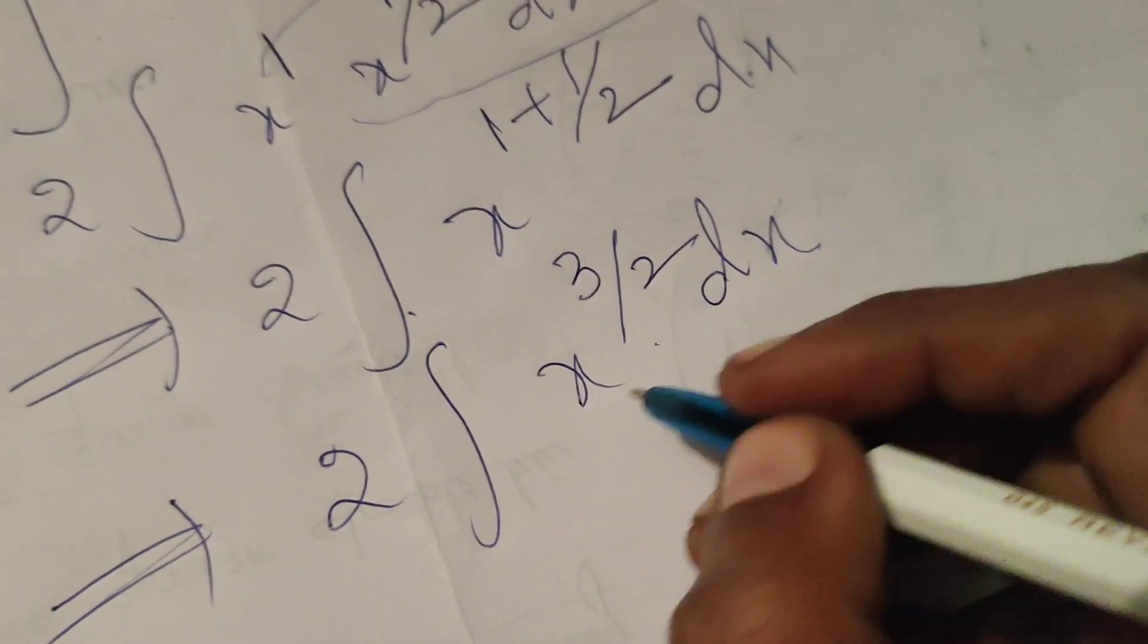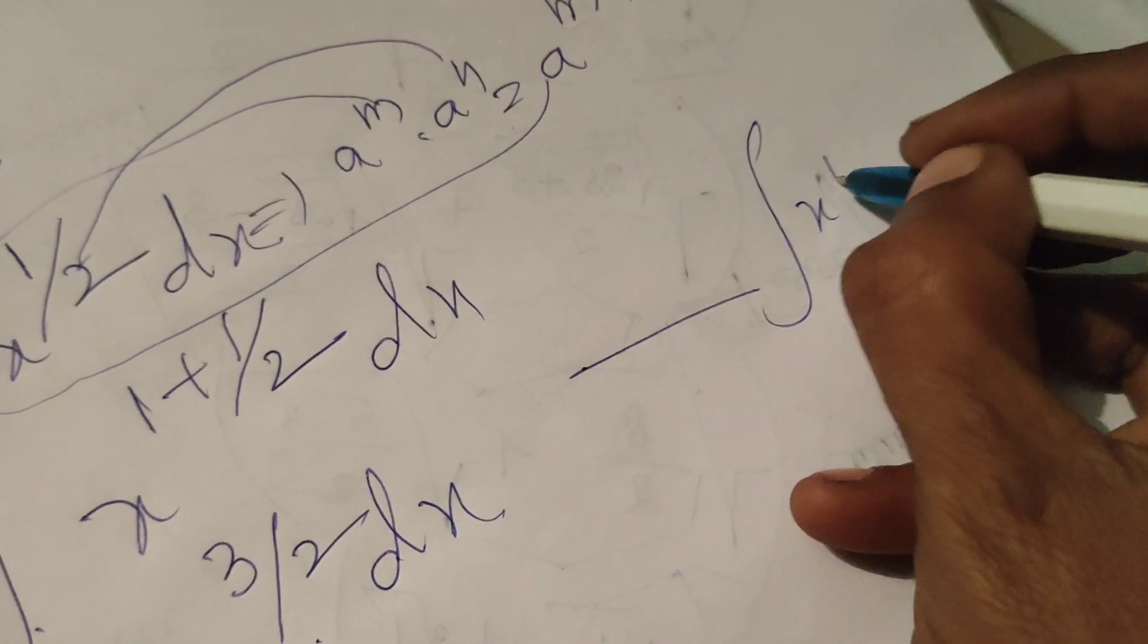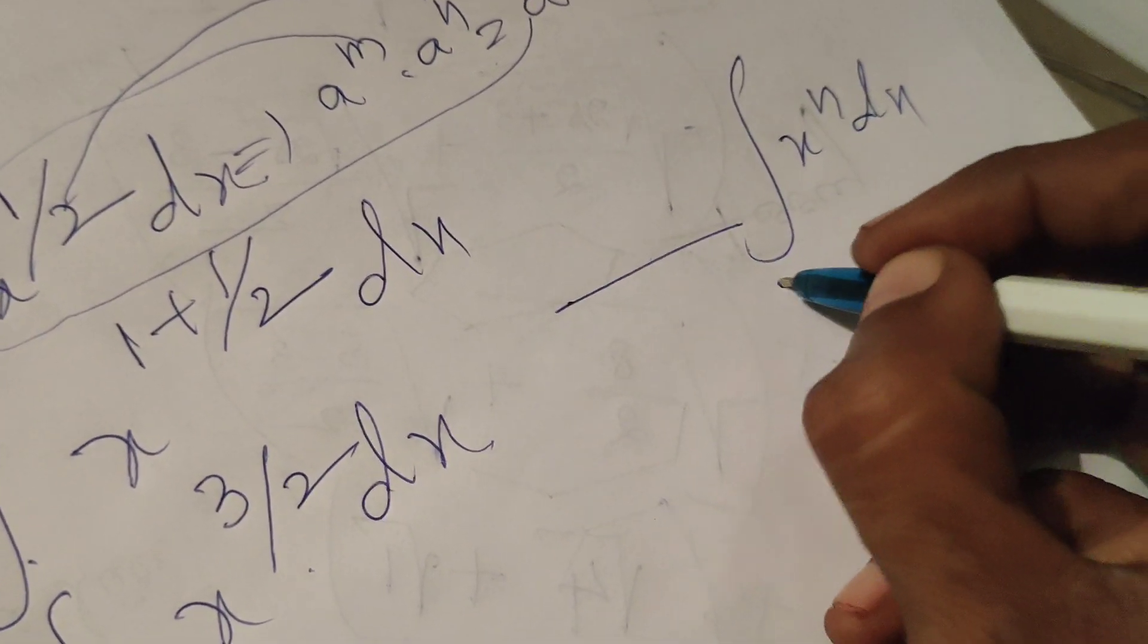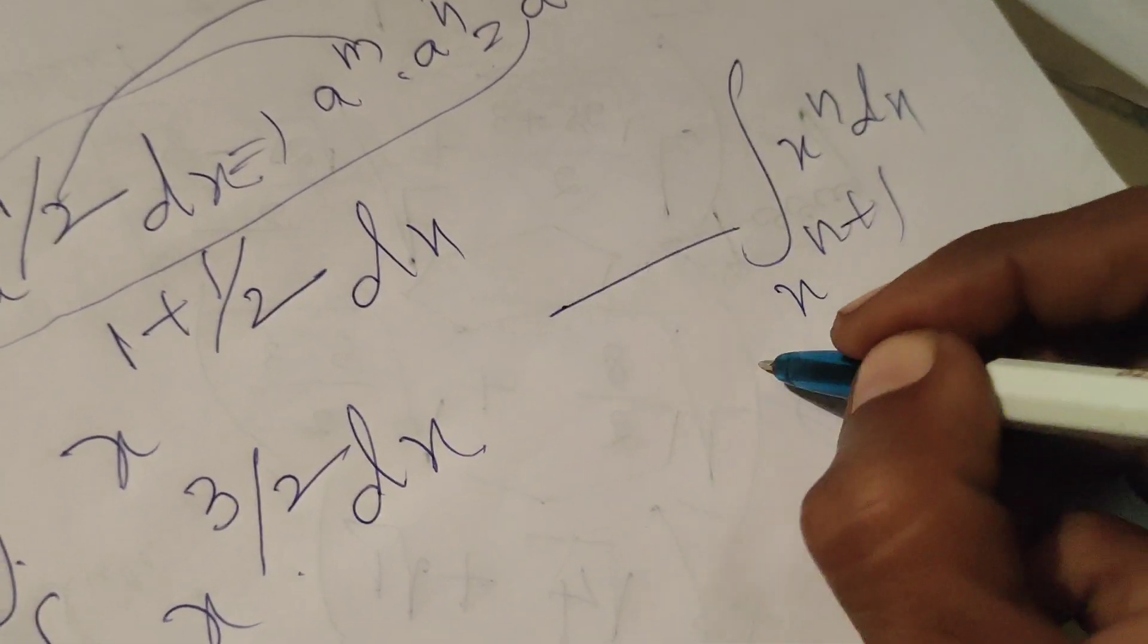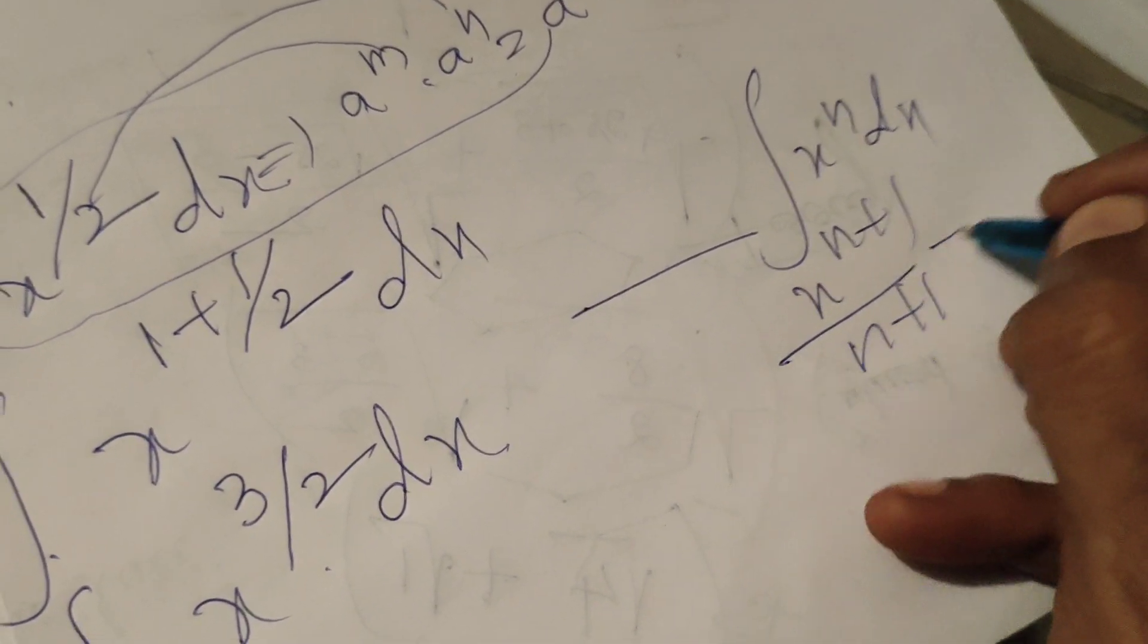Now using the formula here. Integral of x power N dx equals x power N plus 1 by N plus 1 plus C.